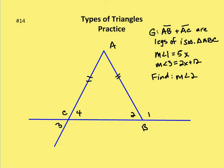In this case, we have an isosceles triangle, and we're given that AB is congruent to AC — they're legs of the isosceles triangle ABC. We're also given that the measure of angle 1 is 5x, and the measure of angle 3 is 2x plus 12.